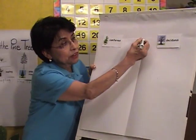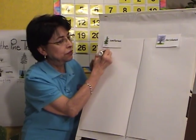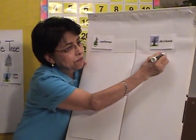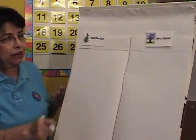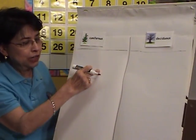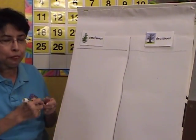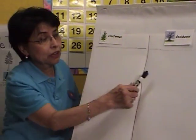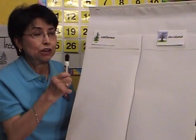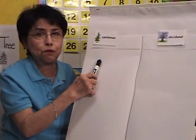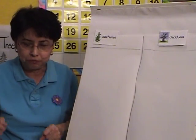So today, boys and girls, now that you've observed and investigated these two types of trees, let's identify them. Let's compare and contrast the two. I'm going to list everything about the coniferous tree and everything about the deciduous tree. I want to make it very clear to children that this is one type and this is another type. There might be some things that are the same for both — I'll just write those for both. I want them to really understand and differentiate between the two.